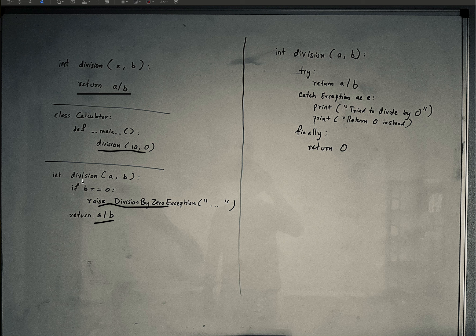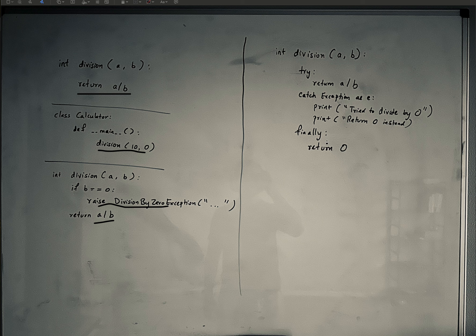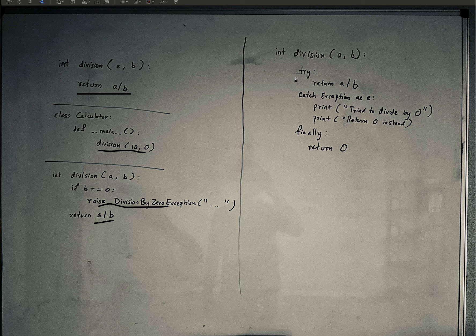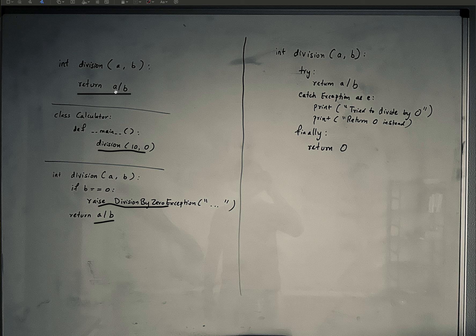Another way in which you can do this in an even better way is by having a try-catch block. What does a try-catch block mean? In a try-catch block, you want to try something. So you want to try dividing a divided by b. If you pass in 10, 1, it will try successfully and just return 10.